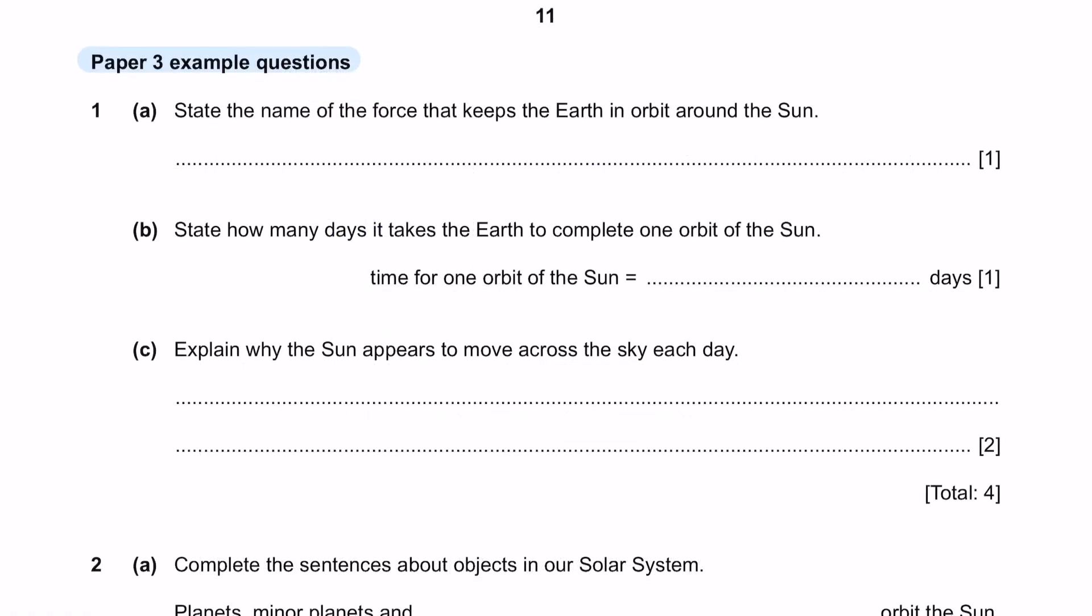Paper 3 Example Questions. Question 1. State the name of the force that keeps the Earth in orbit around the Sun. The force that keeps every planet orbiting around the Sun would be the gravitational force or attraction. Part B. State how many days it takes the Earth to complete one orbit of the Sun. The time for one orbit is approximately 365 days.